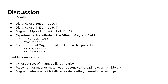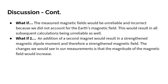Possible sources of error in this lab were other sources of magnetic fields nearby, such as phones, computers, or any other source that would disrupt our calculations. Placement of the magnetometer was not consistent, leading to unreliable data, and the magnetometer was not totally accurate, leading to unreliable readings. Additionally, the measured magnetic fields would be unreliable because we did not account for Earth's magnetic field, which would result in all subsequent calculations being unreliable as well.